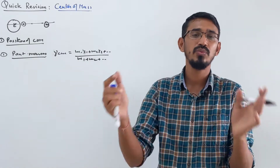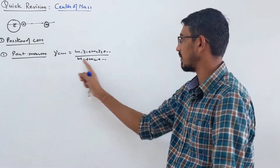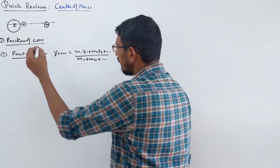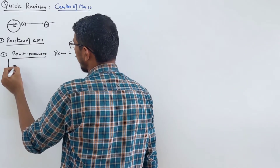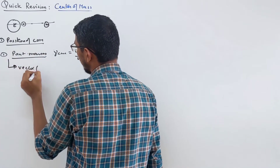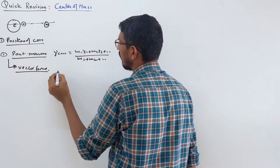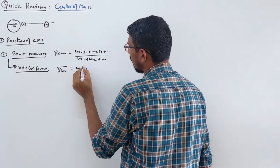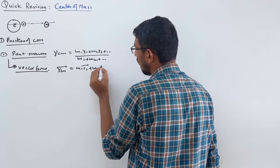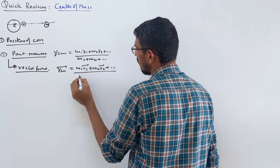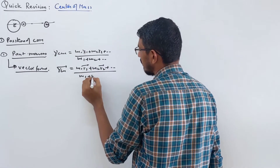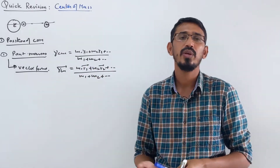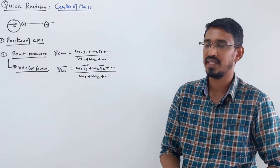You can have one, two, or n number of point masses — the formula goes on the same way. The same question can be asked in vector form as well. So RCM vector = (m1·r1 vector + m2·r2 vector + ...) / (m1 + m2 + ...). Your answer will come in vector form, or you can take the magnitude at the end.